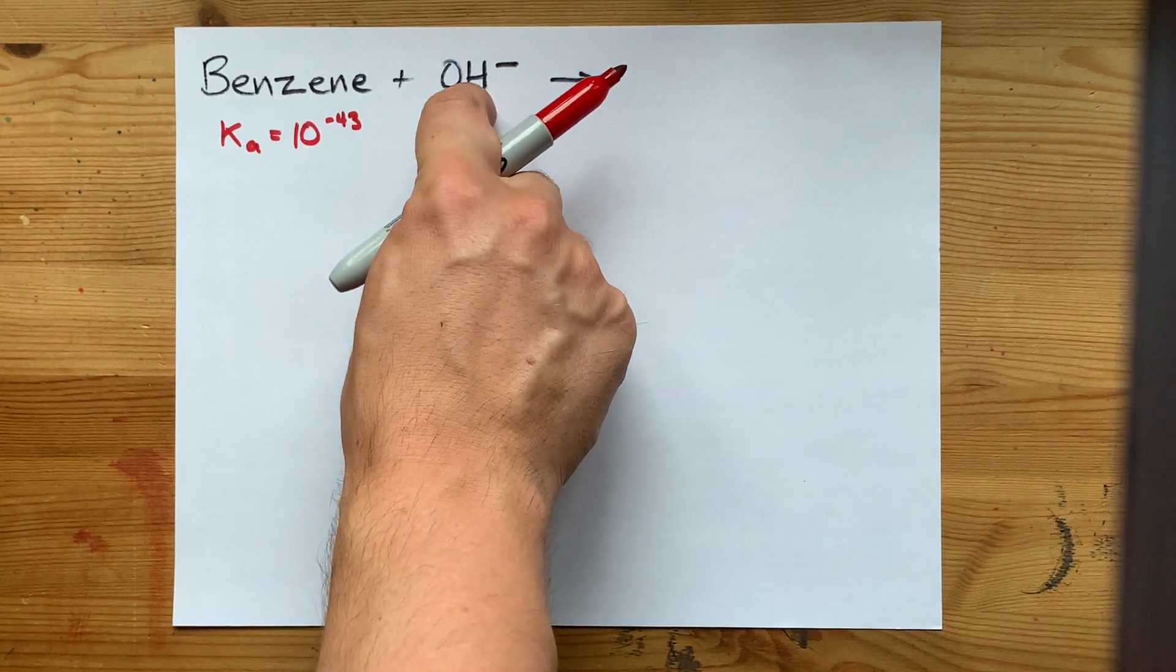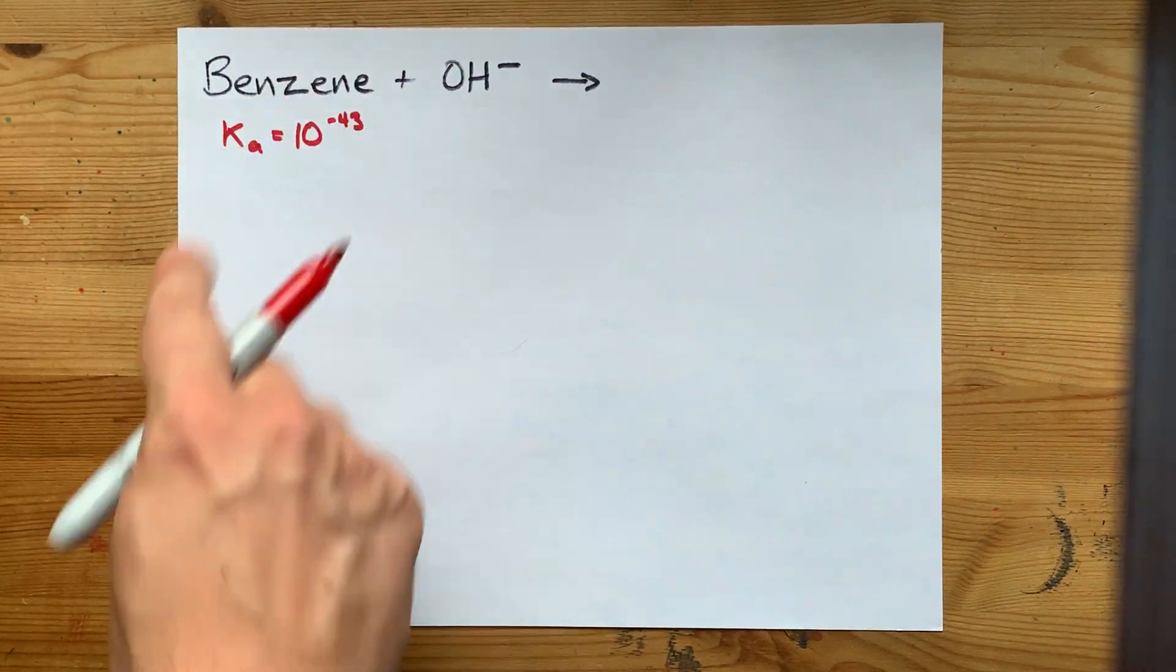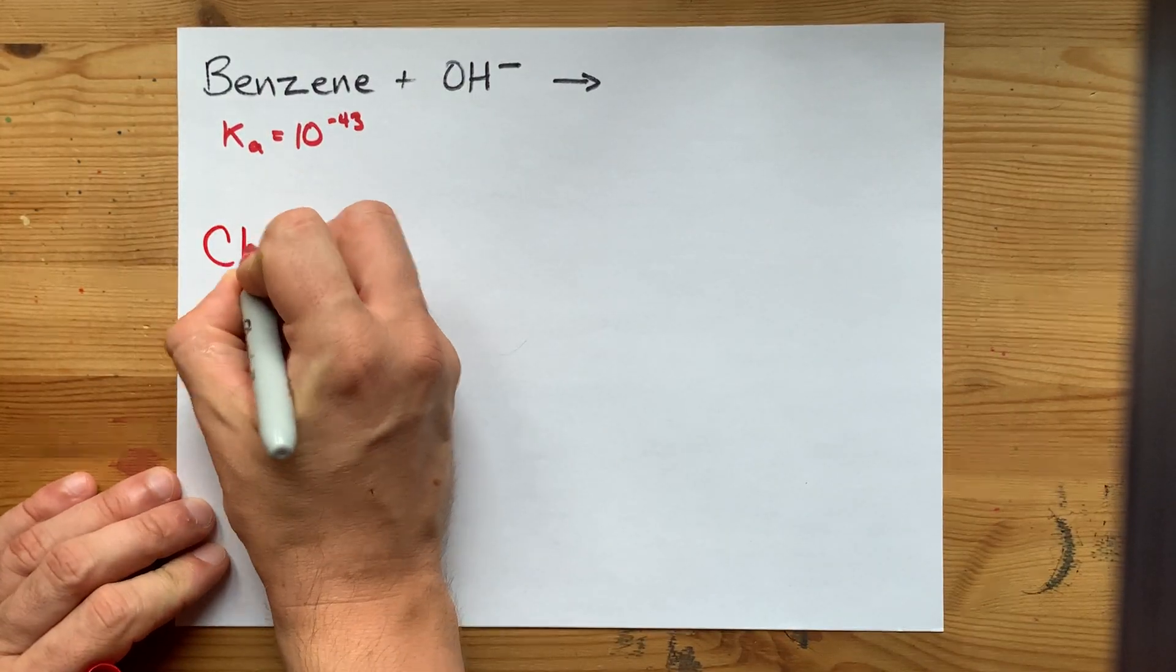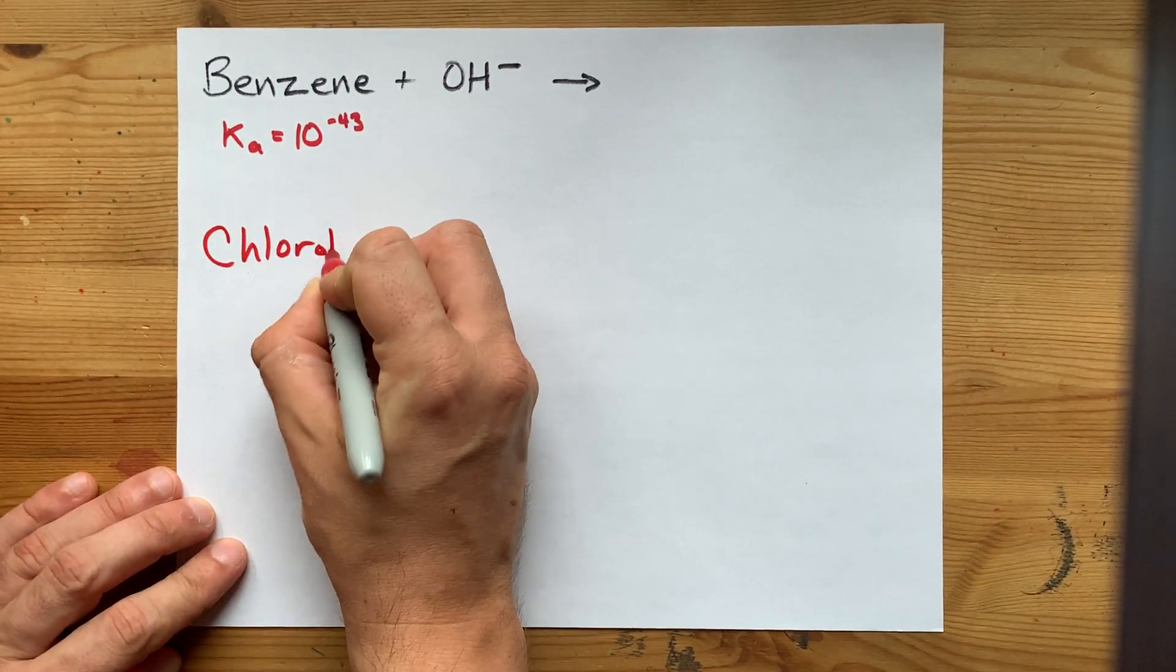OH is simply not powerful enough to remove the H, or an H, away from benzene.